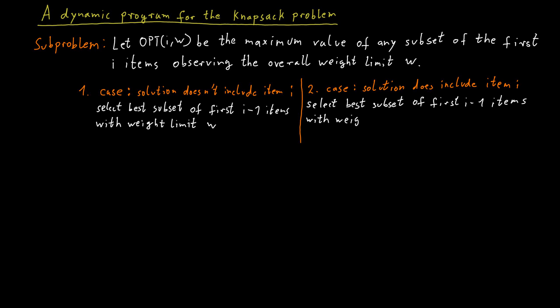And then with this new weight limit, we just need to find the best possible solution for the first i-1 items. So we already committed to packing the i-th item. Now with a reduced weight limit, we're just looking for the best possible solution for the first i-1 items. And if we already know those solutions, we can simply look that up and combine the two. And this gives us a simple recursion formulation for these sub-problems.